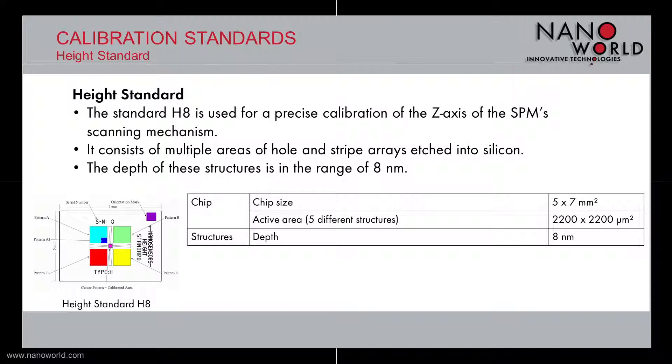The second category of calibration standards is the height standard, called H8. It is designed for a very precise calibration of the Z-axis of the scanning mechanism of SPM and AFM systems.